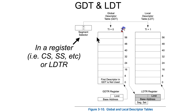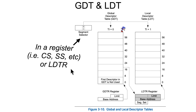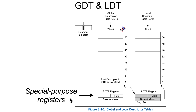So one more time — the segment selector is going to be some sort of thing that is stored in a register like CS, SS, and the segment registers we learned about, or LDTR now that we've learned about. And we've got these special purpose registers where a table indicator might say it's pointing at some particular table, but the special purpose registers are how the hardware actually finds those tables.